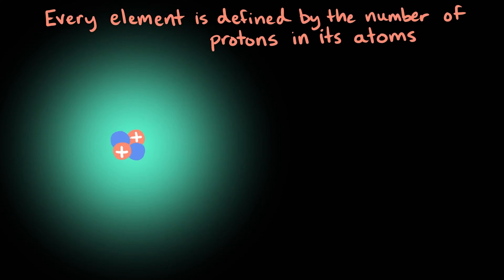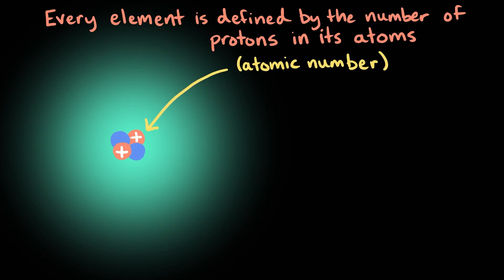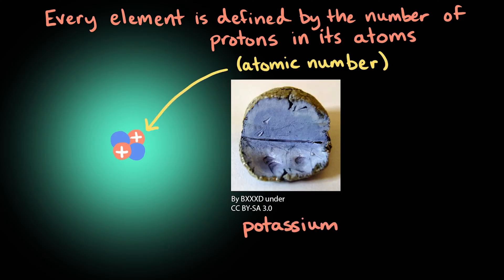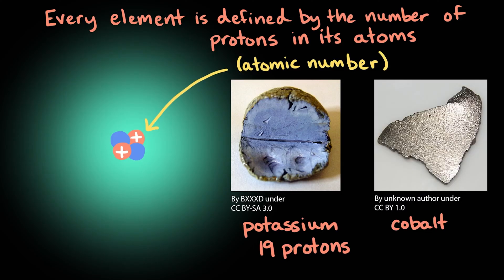Every element is defined by the number of protons in its atoms, which is called its atomic number. For example, every atom of potassium has 19 protons and every atom of cobalt has 27 protons.